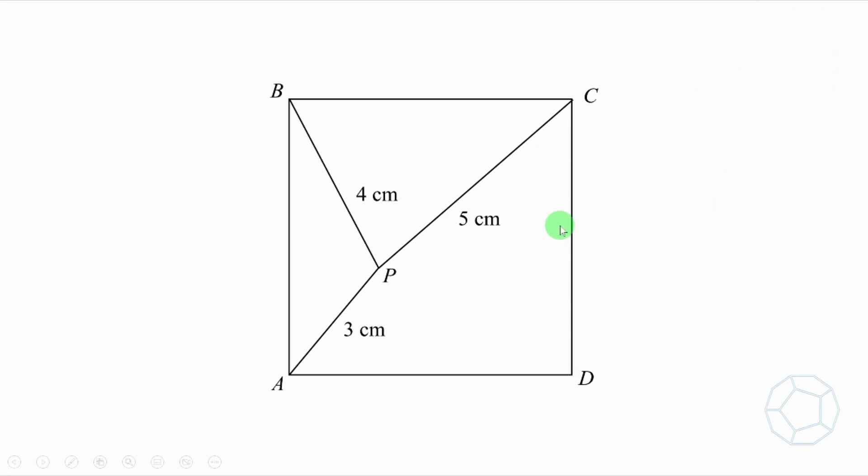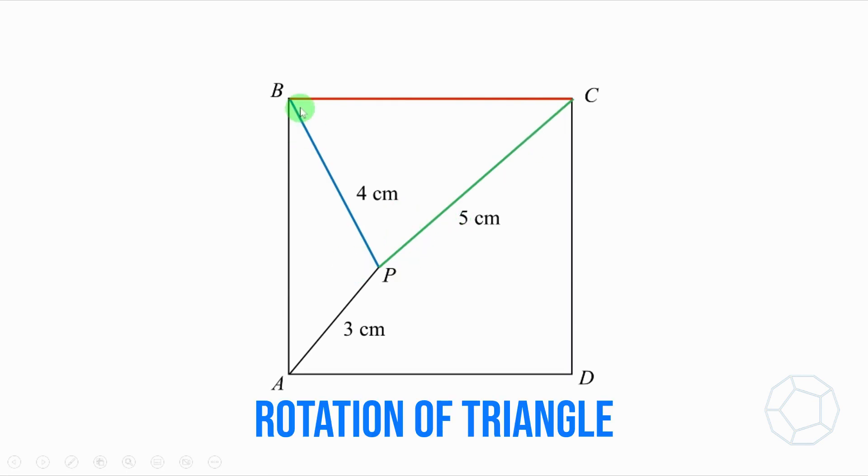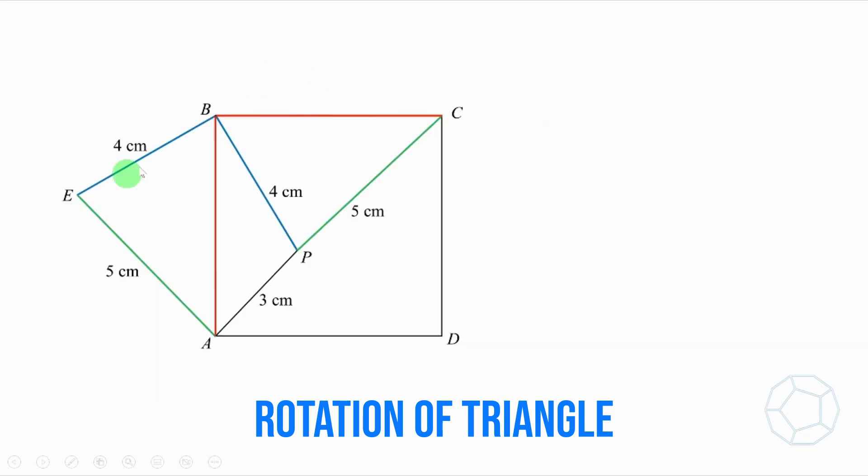First of all, we're going to focus on triangle BPC. Let's color the three sides of triangle like this. Next, we rotate the triangle above the point B by 90 degrees in a clockwise direction to get triangle EBA like this.